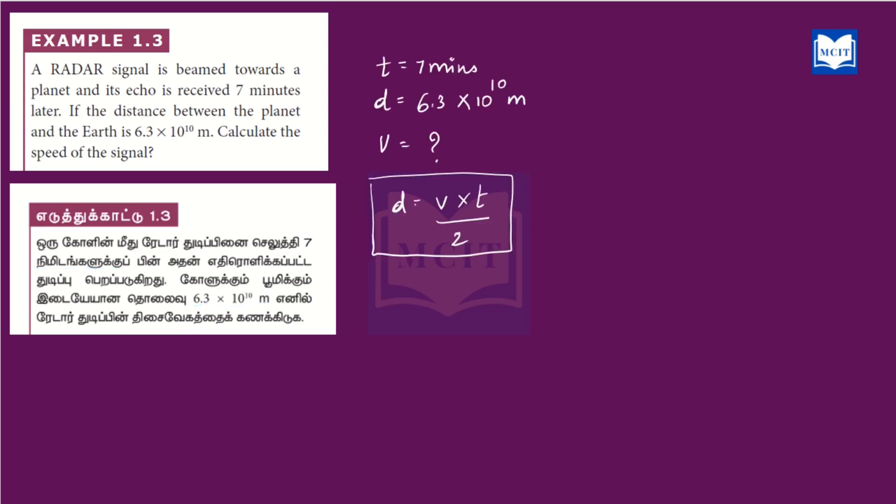The given values are: T is equal to 7 minutes, and the distance D is 6.3 into 10 power 10 meters. We need to find V, the speed. If you have a missing distance value, take it up and convert the time units as needed.